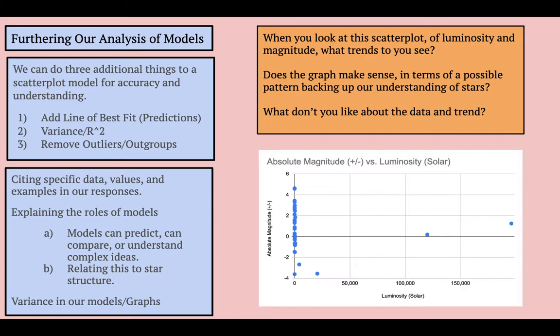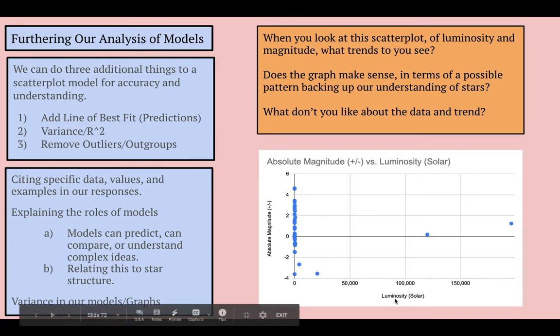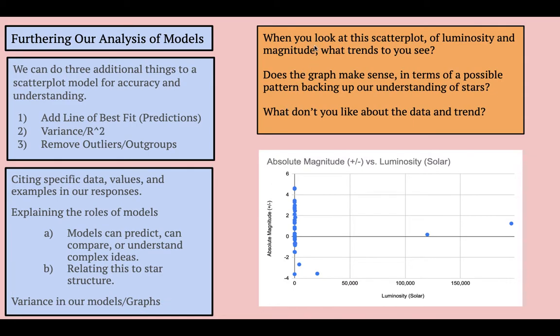So the first thing that we're going to be doing is making a graph of absolute magnitude and solar luminosity, solar luminosity on the x-axis, absolute magnitude on the y-axis, and you're going to want to think about these three questions when you look at this initial scatterplot in terms of possible trends.